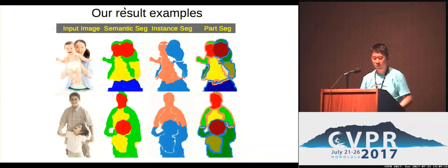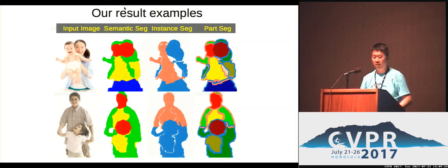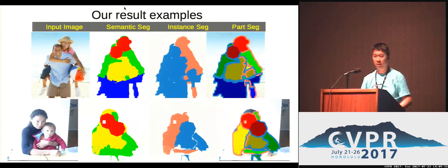This shows more results of our method. The first column is the input image, the second column is the semantic segmentation results, and the last two columns show the instance segmentation and the body part segmentation. There are more results here — let's see how we can do this.